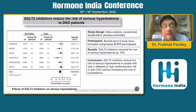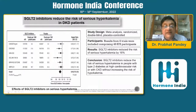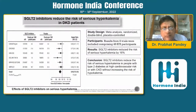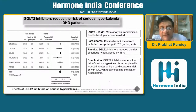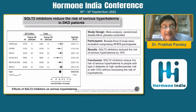SGLT2 inhibitors are now accepted as the first drug of choice in a patient with diabetic kidney disease unless contraindicated. They reduce serious adverse cardiovascular risk in people with type 2 diabetes without increasing the risk of hypokalemia. Benefits have been shown across many trials including heart failure trials with preserved and reduced ejection fraction. In DKD, benefits are supported by the CANVAS trial, showing improvement in kidney function and delaying worsening of GFR when SGLT2 inhibitors are used.